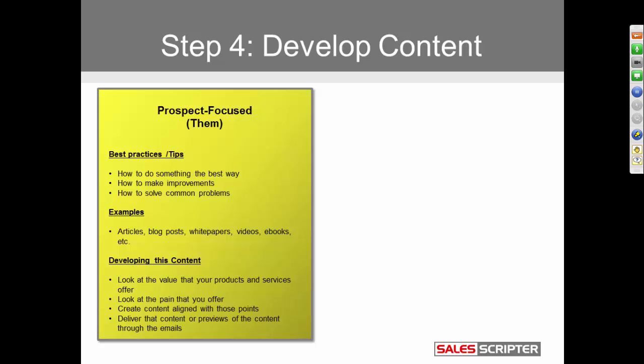SalesScripter is a software solution my company provides that helps sales managers shorten the amount of time it takes to train their salespeople — it improves new salesperson onboarding. If I look at my solution, I can identify that as a benefit I offer. I could then develop content around that benefit — not content that says how my product does this, but content around the impacts of decreasing new hire ramp-up time. I'm saying, 'Here are some things you might want to think about with decreasing this, or here are ways you could consider decreasing this.'